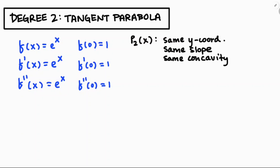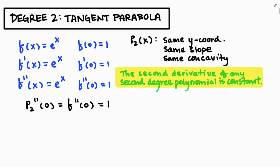The second derivative of p₂ should equal the second derivative of f at x equals 0 to share that concavity. Since f double-prime of 0 equals 1, we need p₂ double-prime of 0 to also equal 1. The key realization: the second derivative of any second-degree polynomial is a constant. So if p₂ double-prime of 0 equals 1, then p₂ double-prime equals 1 at every x.